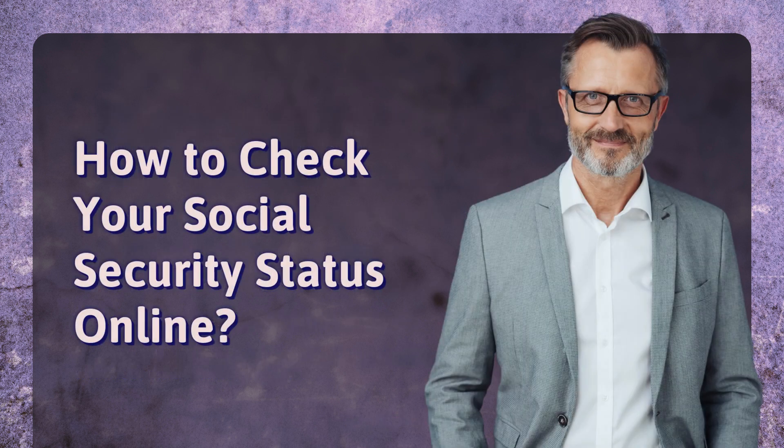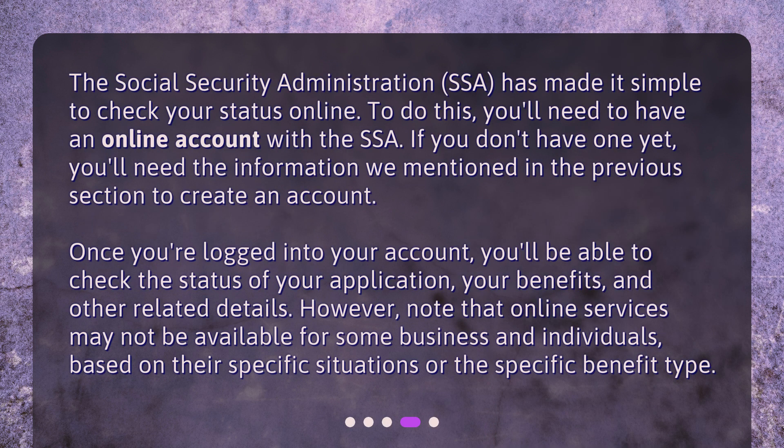How to check your social security status online? The Social Security Administration has made it simple to check your status online. To do this, you'll need to have an online account with the SSA. If you don't have one yet, you'll need the information we mentioned in the previous section to create an account. Once you're logged into your account, you'll be able to check the status of your application, your benefits, and other related details. However, note that online services may not be available for some businesses and individuals, based on their specific situations or the specific benefit type.